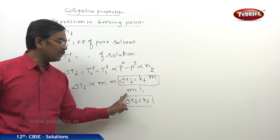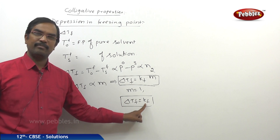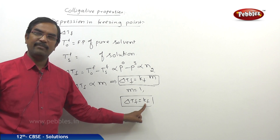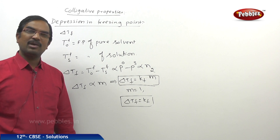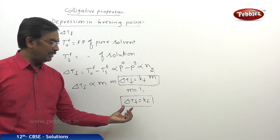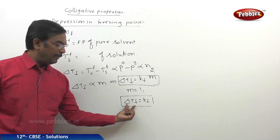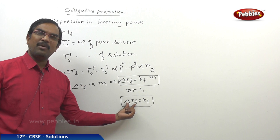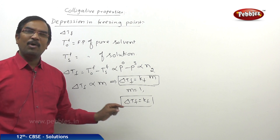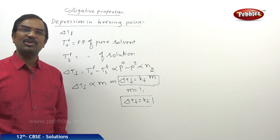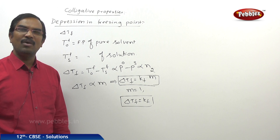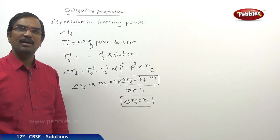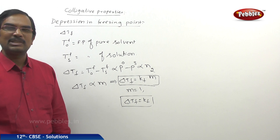When molality M equals 1, we can define Kf: it is the molal depression constant, which is the depression in the freezing point of the solution when the molality of the solution is 1, that is, a 1 molal solution.